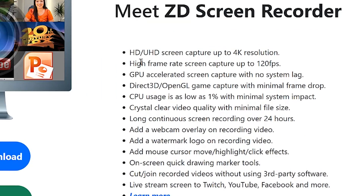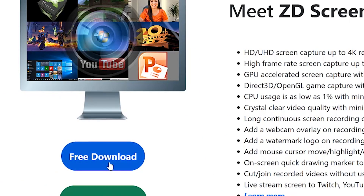These are some of the key features you'll find with ZD Screen Recorder: HD screen capture, high frame rates up to 120 frames per second, GPU, DirectX, OpenGL game capture. You can add a watermark logo on recording videos as you're recording. Cut, join, and record videos without using third-party software. You can do some basic editing with this software, and there are other features as well.